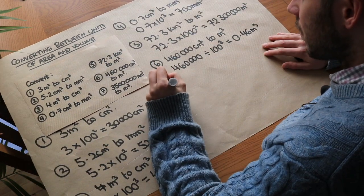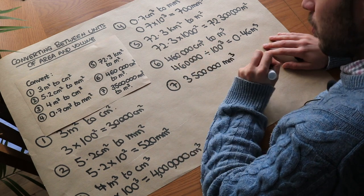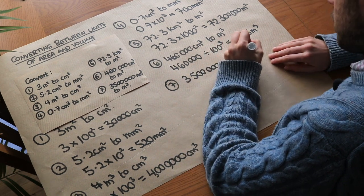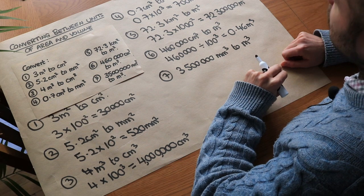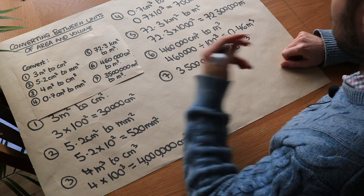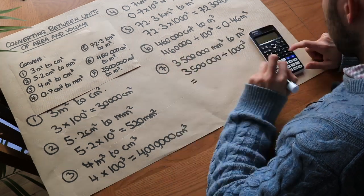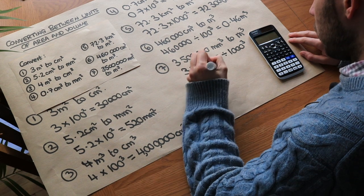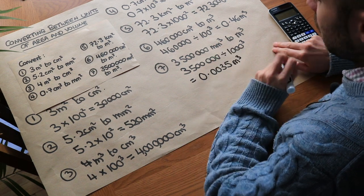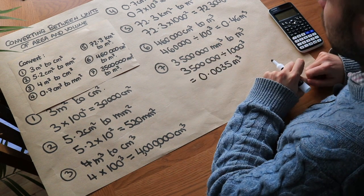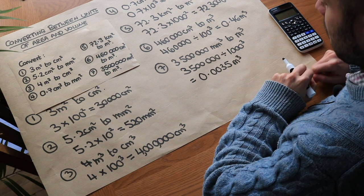Finally, we want to convert three and a half million millimetres cubed to metres cubed. To get from millimetres to metres we divide by a thousand, because there are a thousand millimetres in a metre. So we divide by a thousand cubed, and that gives 0.0035 metres cubed. We have an awful lot of millimetres cubed — there are so many millimetres cubed in a metre cubed that you end up with a very small number of metres cubed.